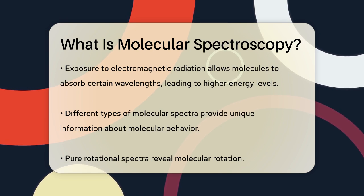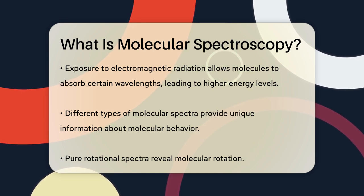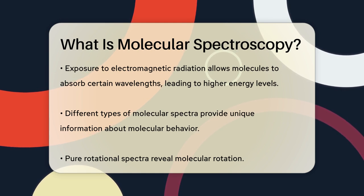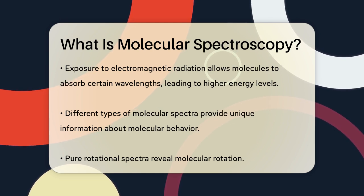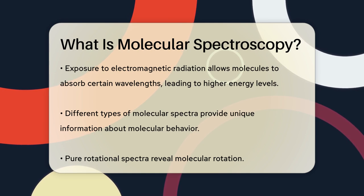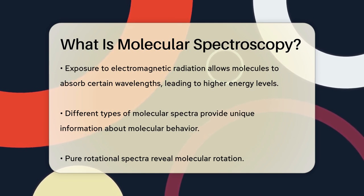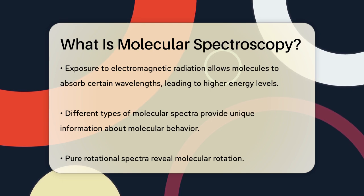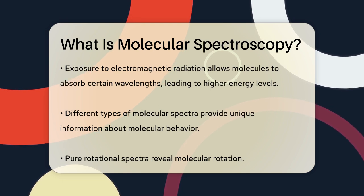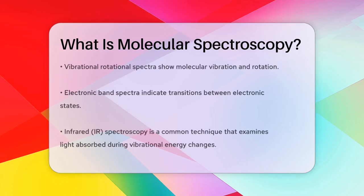There are several types of molecular spectra, each telling us something different about the molecule. For instance, pure rotational spectra show us how molecules rotate, vibrational-rotational spectra reveal how molecules vibrate and rotate, and electronic band spectra tell us about the transitions between different electronic states.